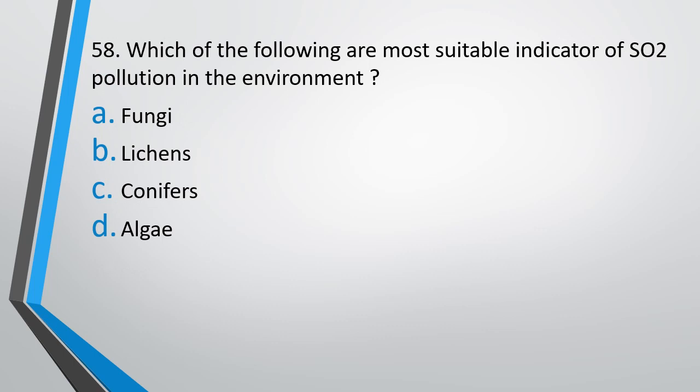Question number 58. Which of the following are the most suitable indicator of SO2 pollution in the environment? Fungus, lichens, conifers, algae. Most suitable indicator of SO2 pollution? Correct answer is option B, lichens.